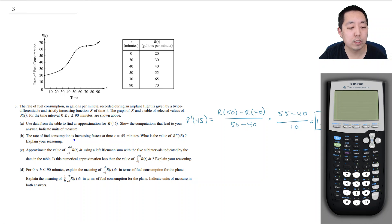The rate of fuel consumption is increasing fastest as time t equals 45 minutes. What is the value of R' of 45? And explain your reasoning. Well, if it's increasing the fastest right here. Wait, the rate of fuel consumption, that means this slope is the steepest there. The rate of fuel consumption is increasing, so the slope is steepest here.